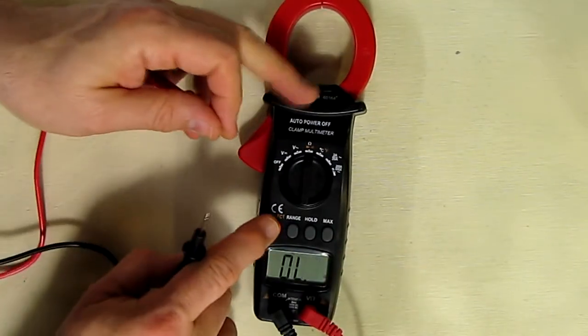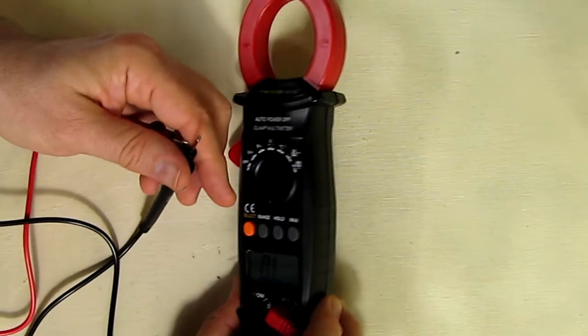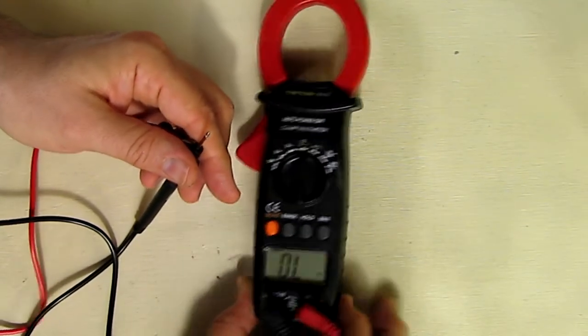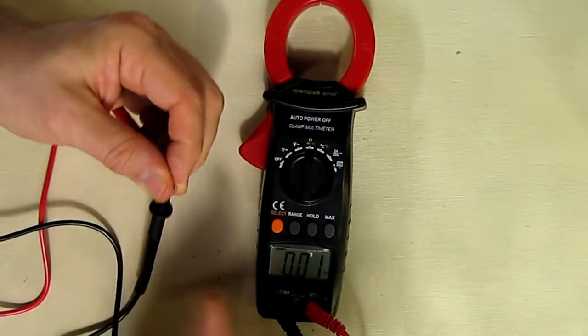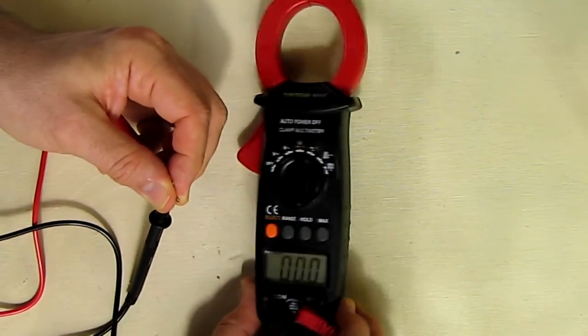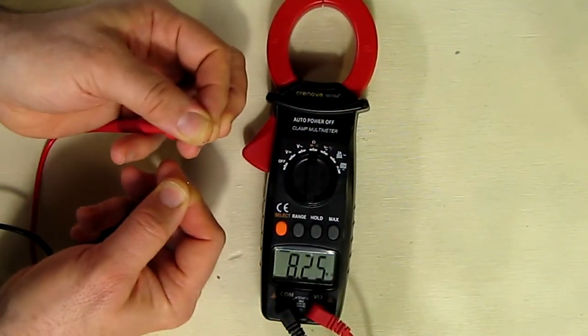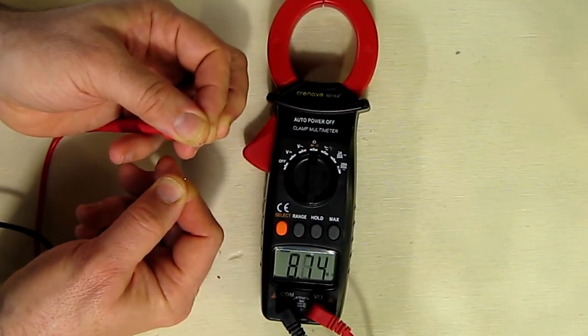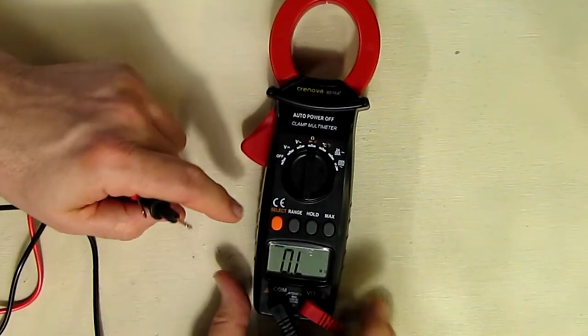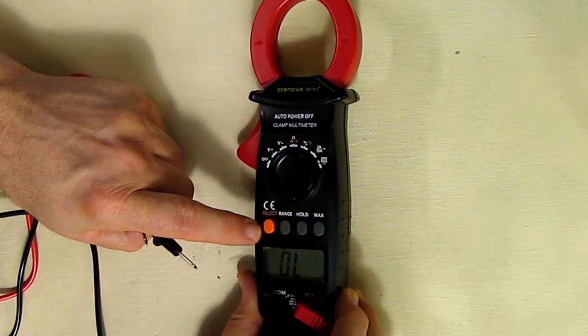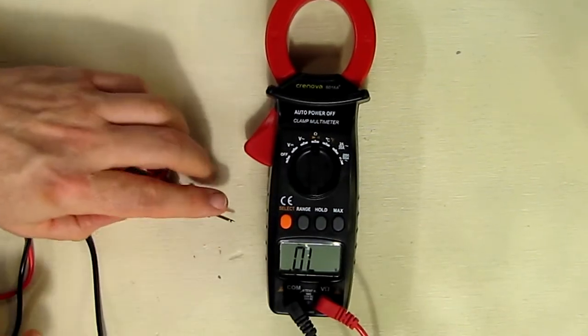You hit that again and the beep goes away and it's in mega ohm setting right now for higher resistance things. For instance, I can put it across my hands and you can see it shows 8.2 mega ohms. So that allows you to measure some higher resistance values.